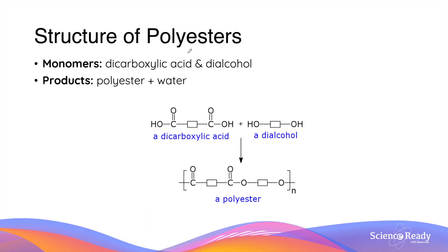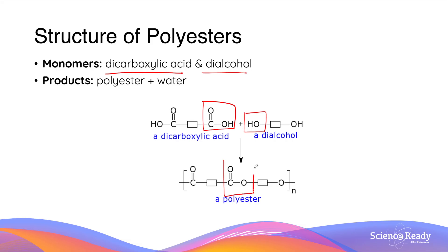The production of polyesters uses monomers that are dicarboxylic acids and di-alcohols — specifically, a molecule with two carboxylic acid functional groups and a molecule with two alcohol functional groups. The reaction between a carboxylic acid and an alcohol functional group results in the formation of an ester linkage, which is why this polymer is called a polyester.